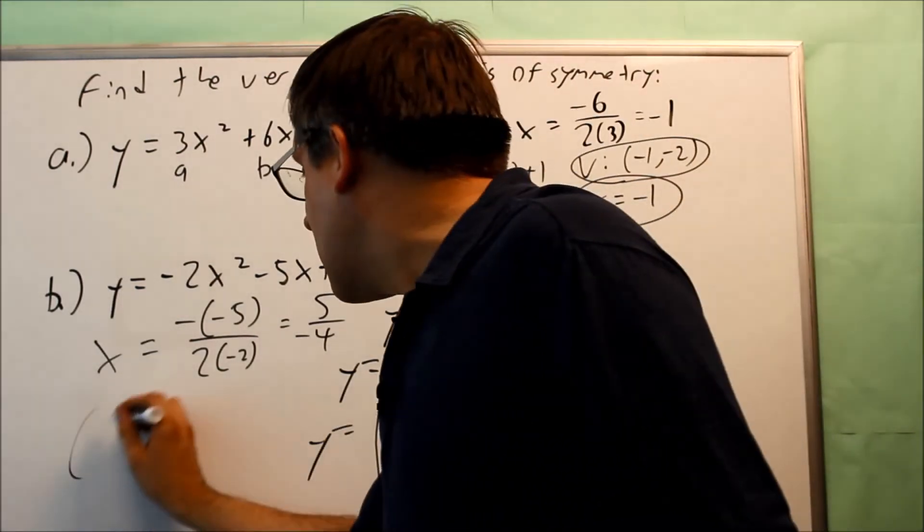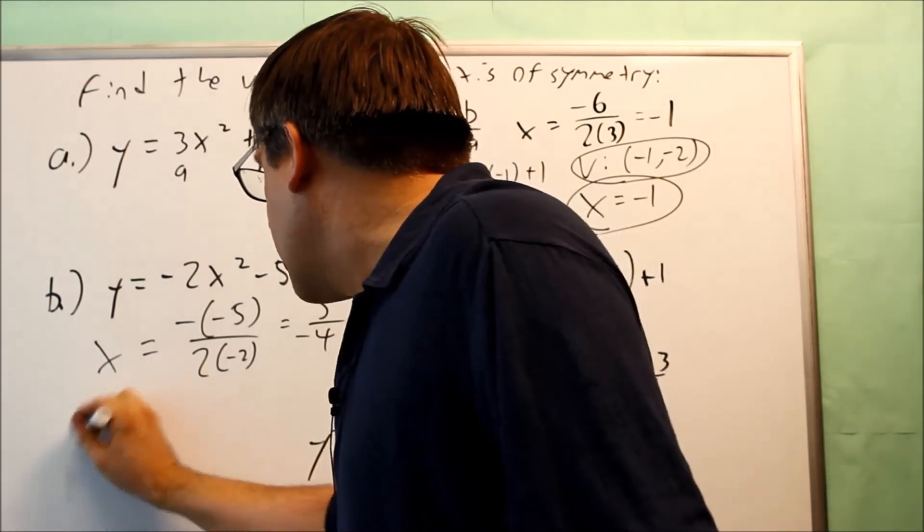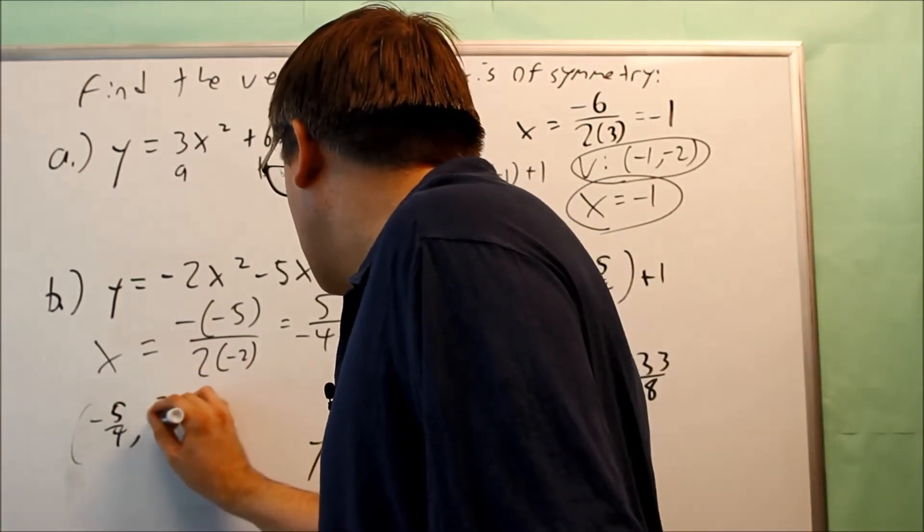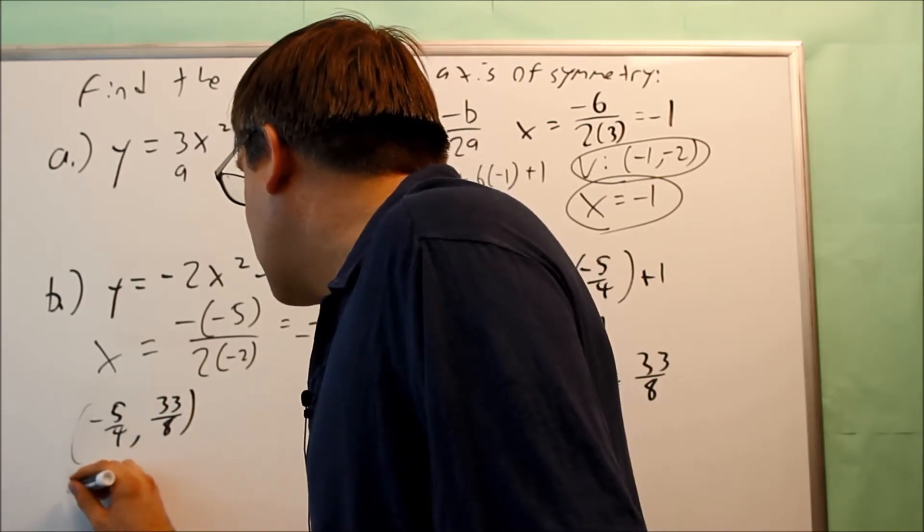So if you want to write it out as a coordinate, you get negative 5 fourths and then 33 eighths.